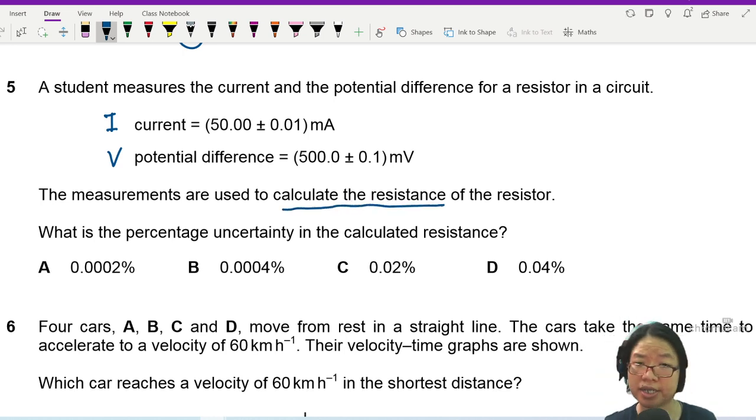What is the percentage uncertainty in the calculated resistance? So hopefully everyone knows that to find resistance is the ratio of V over I, potential difference over current.